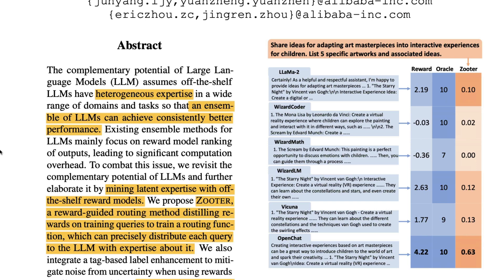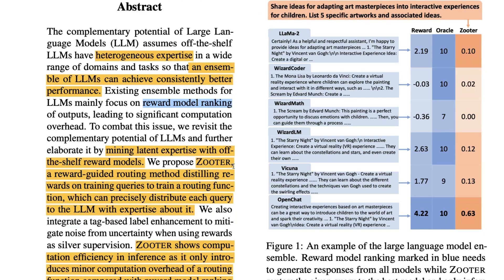Not only can it achieve consistently better performance, you can also reduce the compute issue. Typically when you want to combine these LLMs, a popular technique is Reward Model Ranking (RMR). But instead of RMR, people are using here a different approach called ZOOTER — a new reward guided routing method that distills the rewards on training queries to train a routing function.